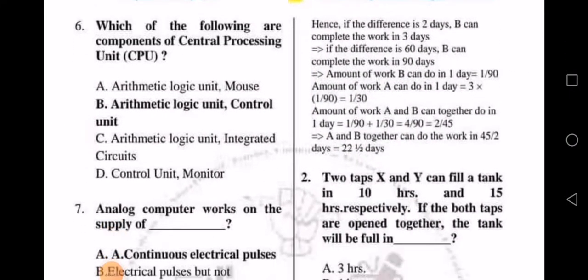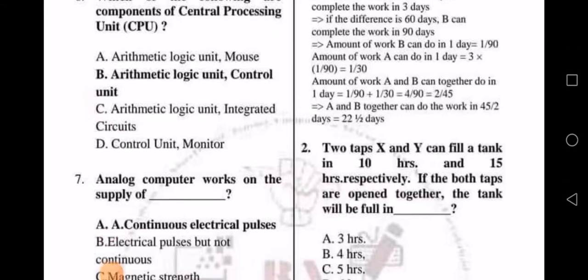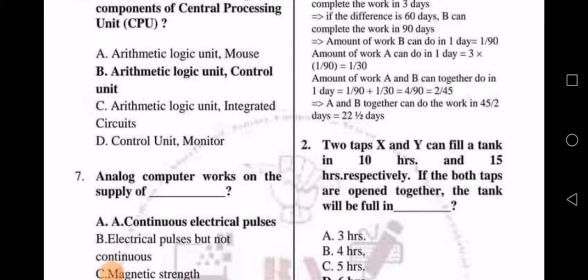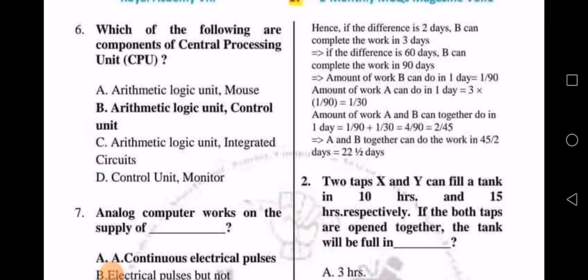Which of the following are components of central processing unit CPU? A, arithmetic logic unit or mouse. B, arithmetic logic unit and control unit. C, arithmetic logic unit, integrated circuit, or D, control unit or monitor. So the answer is B, arithmetic logic unit and control unit.